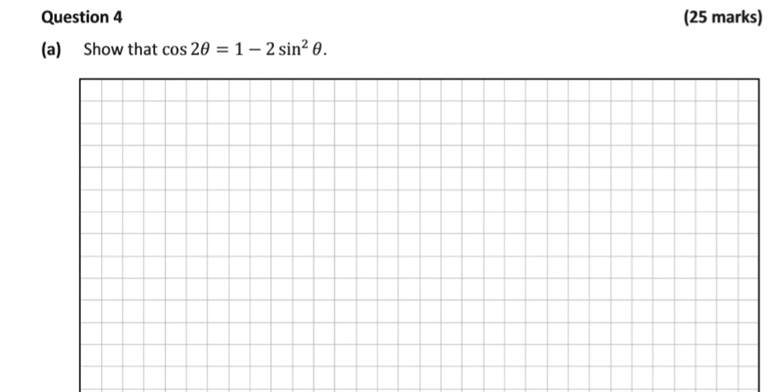In this video we're looking at the SEC Leaving Cert Higher Level, Paper 2, Question 4, and the year is 2019. The first part is asking us to show that cos 2θ is equal to 1 minus 2 sine squared θ.